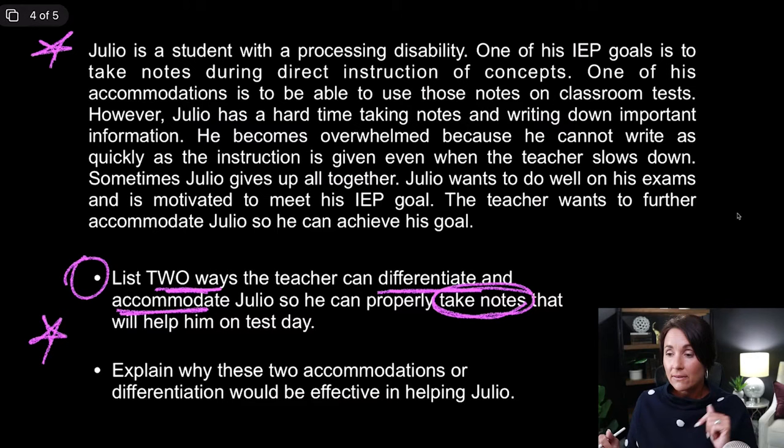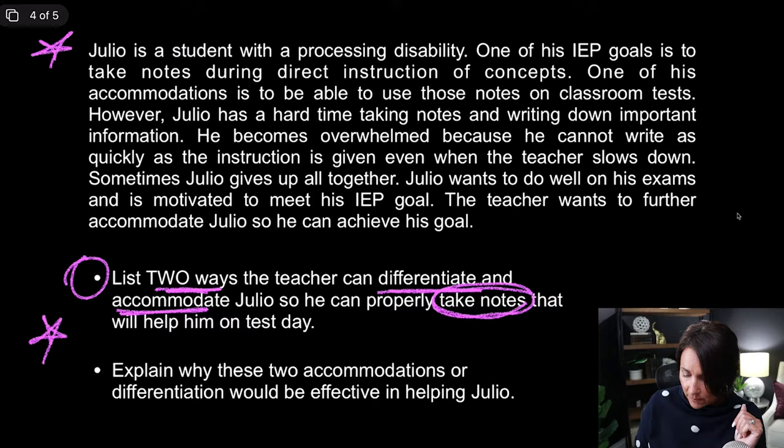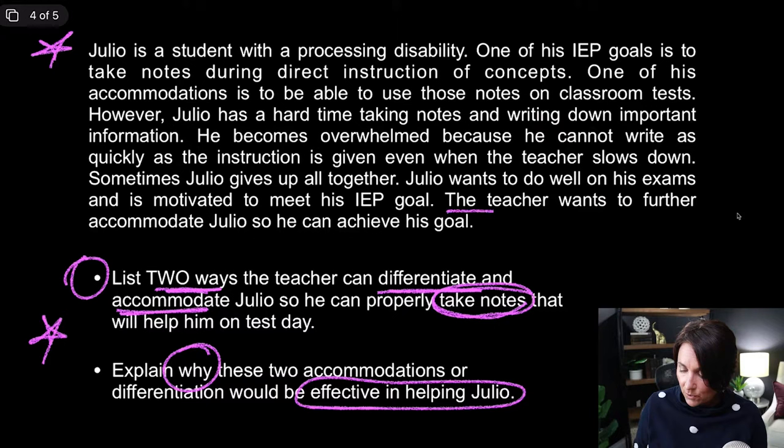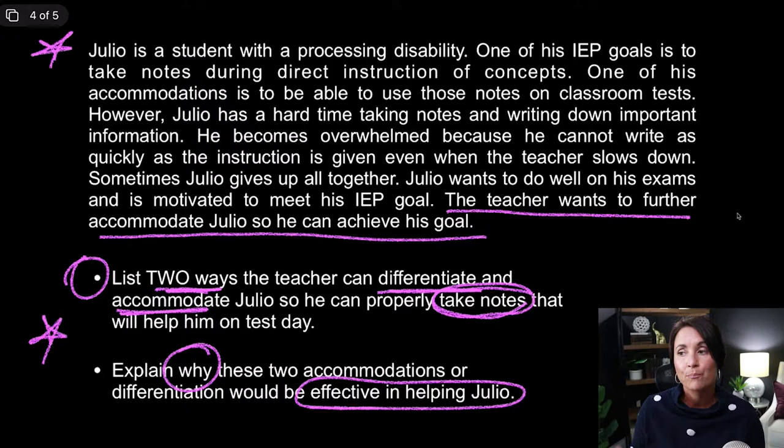The second part of the task is to explain why these two accommodations or differentiation would be effective in helping Julio. So not only am I going to say what I'm going to do and what accommodations — I need to say why those would be beneficial. Now I want to read the question stem first. The teacher wants to further accommodate Julio so he can achieve his goal.